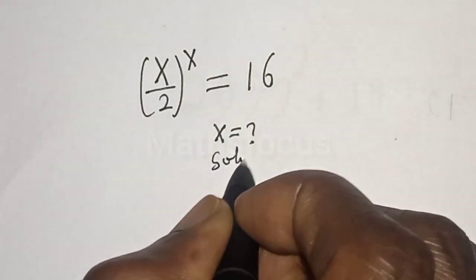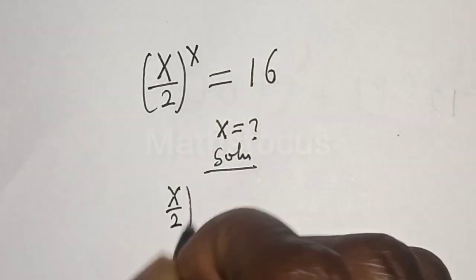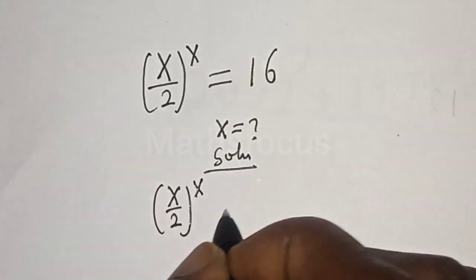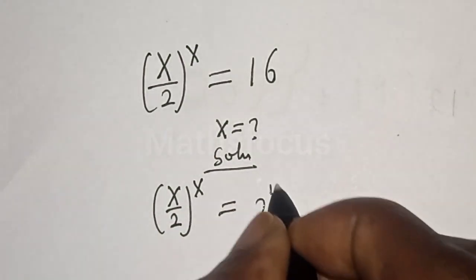Solution. X divided by 2 to the power of S is equal to 16, can be written as 2 to the power of 4.